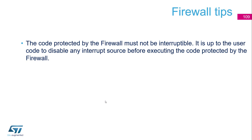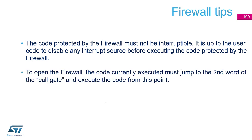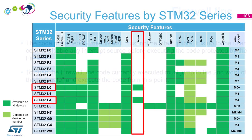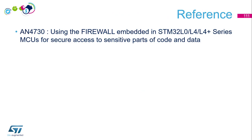Some firewall tips: the code protected by the firewall must not be interruptible — it is up to the user code to disable any interrupt source before executing the protected code. To open the firewall, the currently executing code must jump to the second word of the call gate. The firewall is available only on the STM32L0 and STM32L4 families. It is also advised to consult application note AN4730 for many details and interesting information. Thanks for your attention.